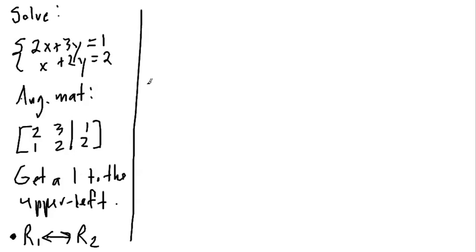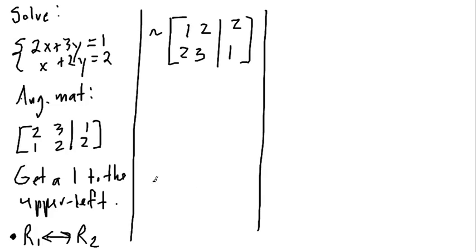And so what we get is the similar matrix. The bottom row now becomes the top, 1, 2, 2. And the top row now becomes the bottom, 2, 3, 1. Now the second thing I would like to do is to get a 0 in the lower left. And the only way I'm going to accomplish this is by adding a multiple of row 1 to row 2. So I want to make a multiple of row 1 and row 2 add up so that I get a 0 down here.